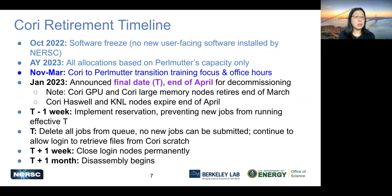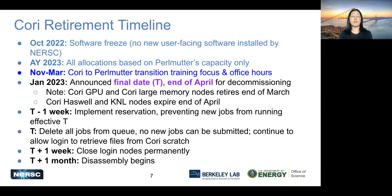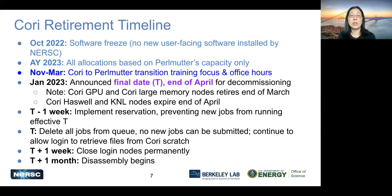Timeline: we started a software freeze in October 2022, so no more new user-facing software is to be installed on Cori. We had office hours focused on transitioning starting November. The bigger system parts — Haswell nodes and KNL nodes — are to be retired at the end of April. However, two parts will actually retire early, at the end of March. Cori GPU nodes will retire at the end of March. And the large memory nodes are being planned to be moved to Perlmutter at some point in time — we don't have a timeline for that, but it'll be moved to Perlmutter.